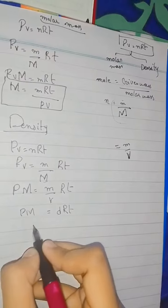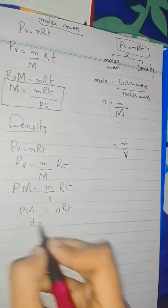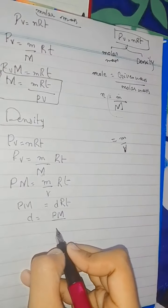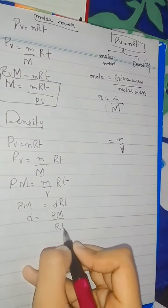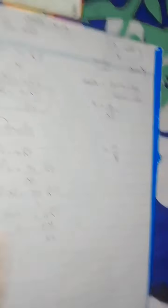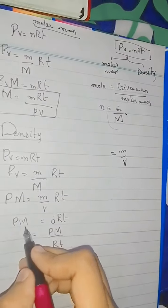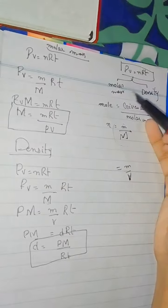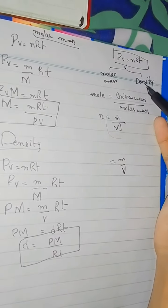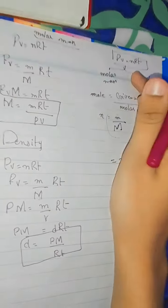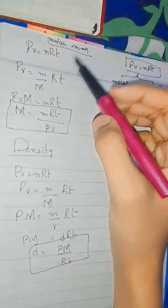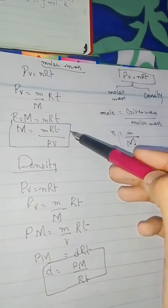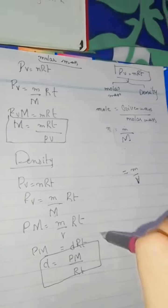Since m/V is basically equal to density, we write PM = density × RT. We have to find density, so since R and T are multiplying they will divide: density = PM divided by RT. That is the equation for density. So with the help of the ideal gas equation, we have found both molar mass and density.